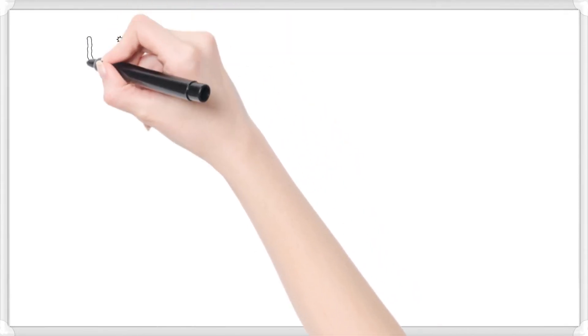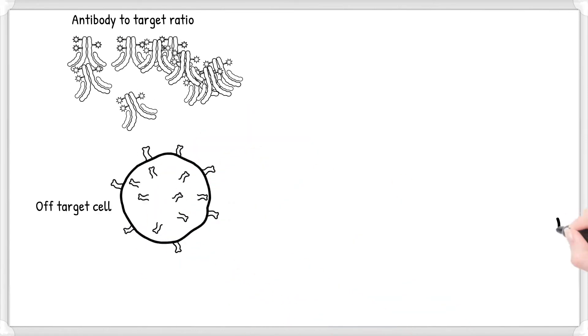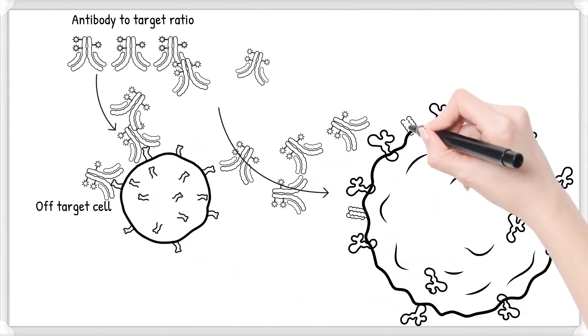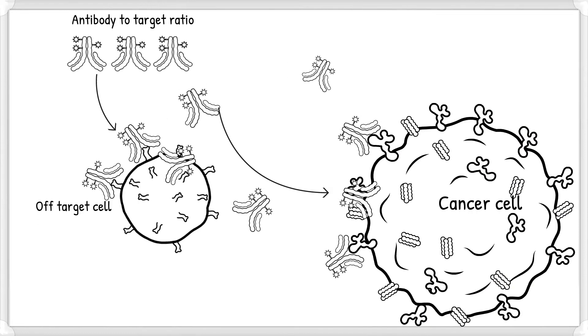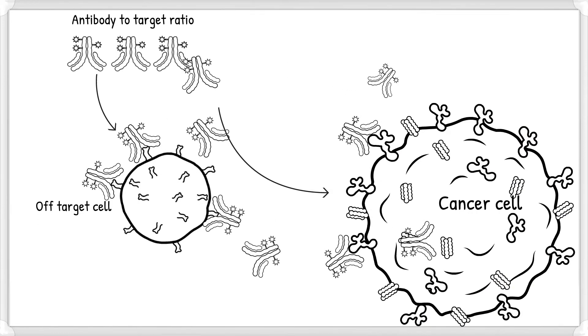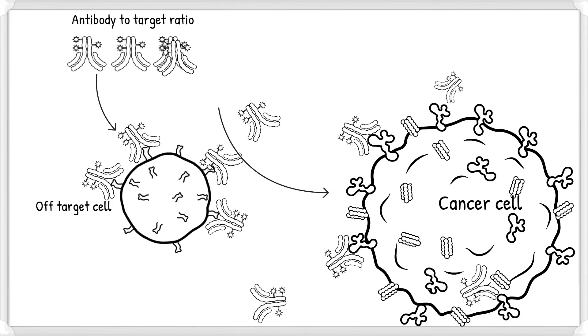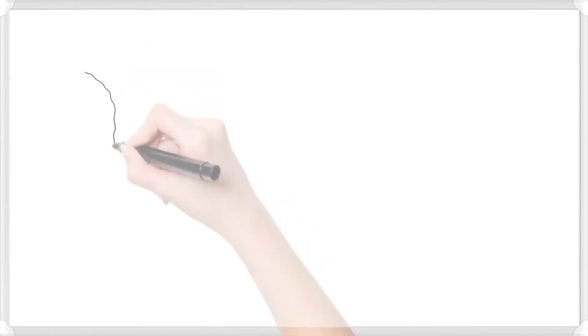Antibody specificity influences the amount of ADC that reaches the tumor cell. Suboptimal specificity and antigen expression can contribute to ADC distribution to normal tissue rather than cancer cells.